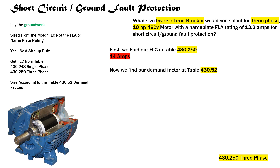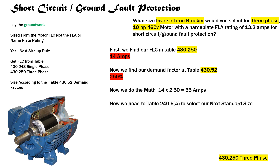Now we'll find our demand factor in table 430.52. We start on the left-hand side with our type of motor, then come across to our type of overcurrent protection — inverse time breaker — and we find that it's a demand factor of 250 percent. Now we do the math: 14 multiplied by 2.50 gives us 35 amps.